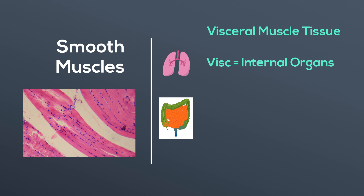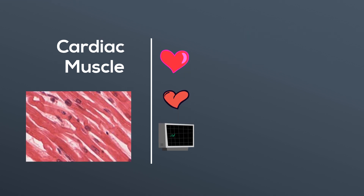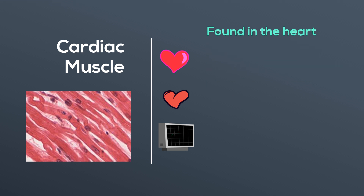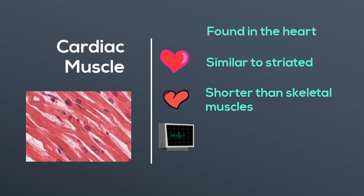Smooth muscle is named as such because it does not have the striped appearance of a skeletal muscle. Cardiac muscles are similar to skeletal muscles because cardiac muscles are striated; however, they are shorter than skeletal muscles and they usually contain only one nucleus.